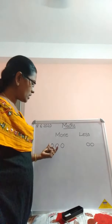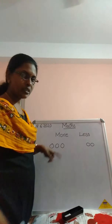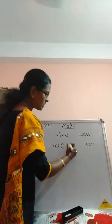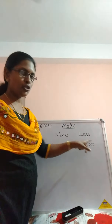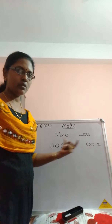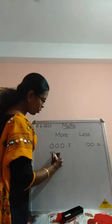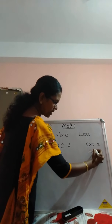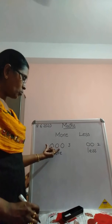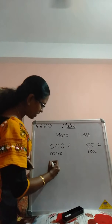How many circles? Count it. One, two, three — three circles. Here one, two — two circles. Which is more, this or this? Yes, this one is more. This one is less. More circles here, less circles here.